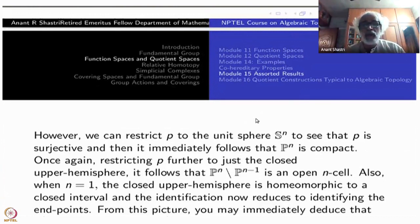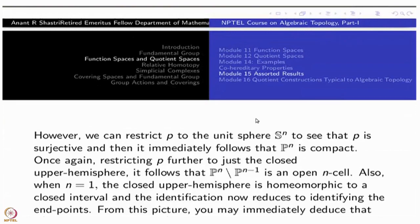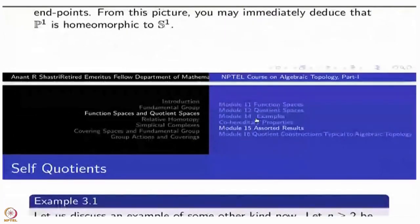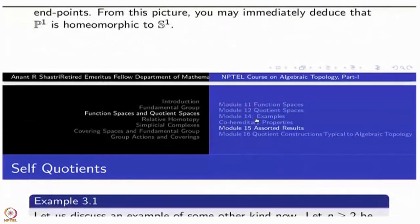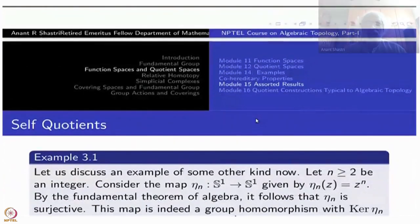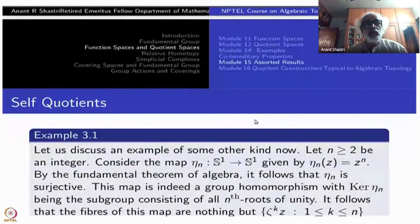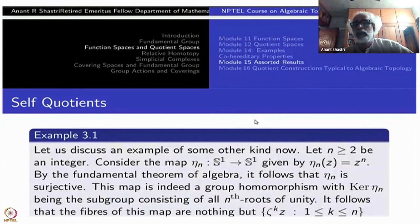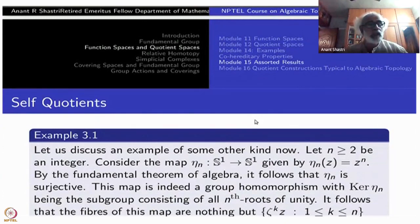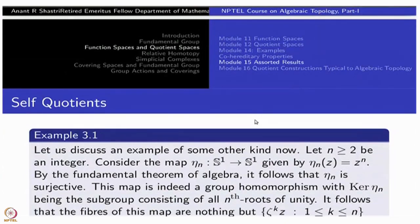In the case of N equal to 1, this already tells you that P^1 is nothing but S^1 again. Now, let us consider totally different kind of quotients. Quotients could be quite weird. That is what I wanted to tell you. Namely, there are spaces which are self quotients. Here is a simple example but there are many such examples.